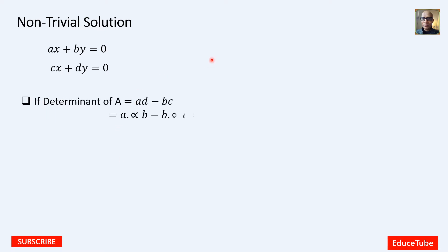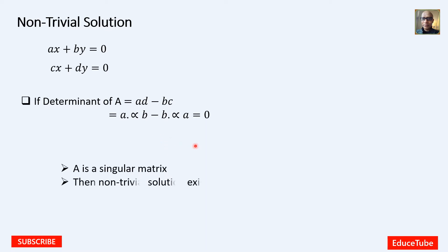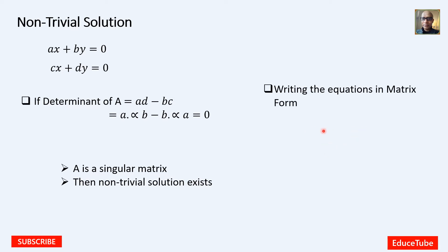Now we will determine the determinant of matrix A. With these four constants A, B, C, and D, we can make a matrix. From this matrix, we find the determinant of A equals A·D minus B·C.